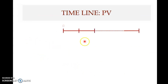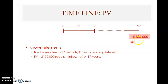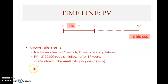Now we express this in terms of a timeline. The known elements are: the term — 17 years or 17 periods of earning interest; the future value of $150,000, which is positive because it is a cash receipt or inflow after 17 years from your investment. Since this is a cash inflow, there must be a matching cash outflow earlier.